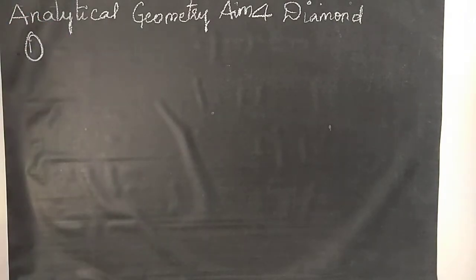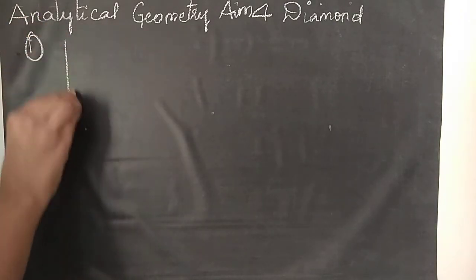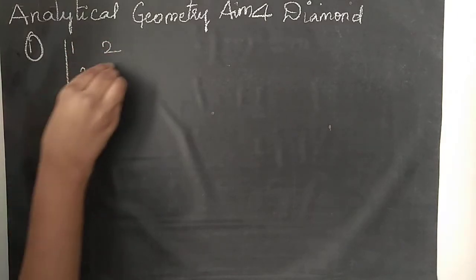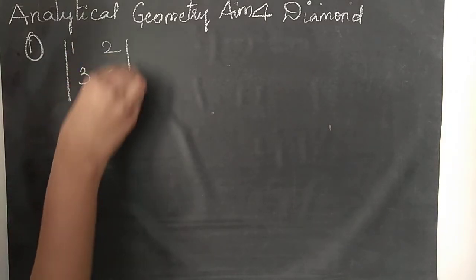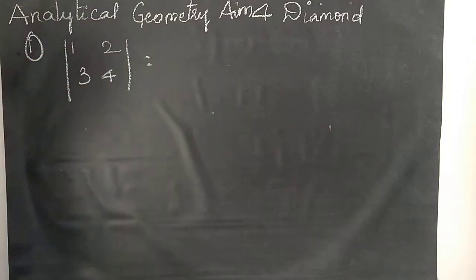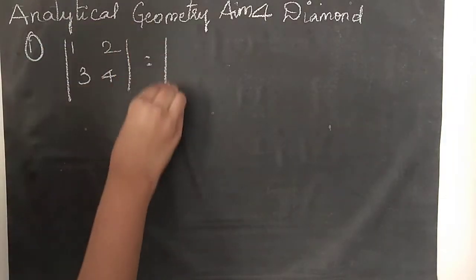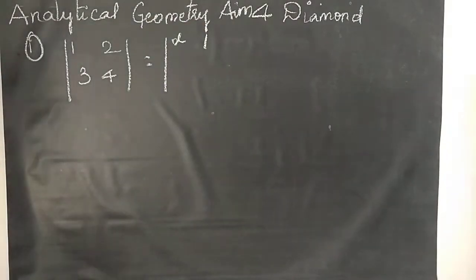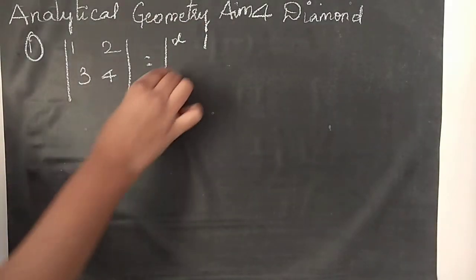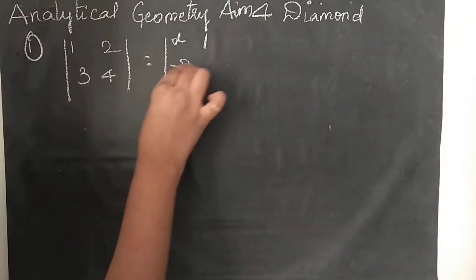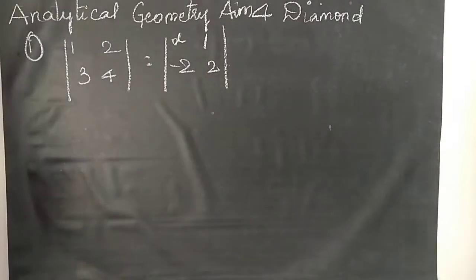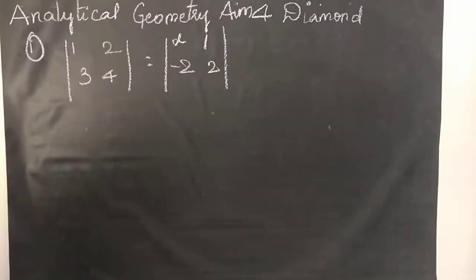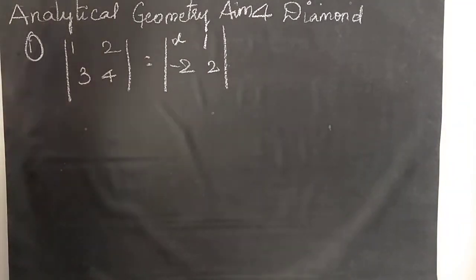The first question is: the determinant with entries 1, 2, 3, 4 equals the determinant with entries x-1, 2. So we have to find the value of x. How to find it?